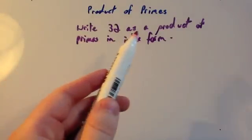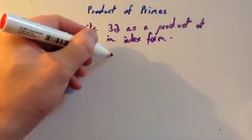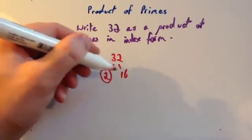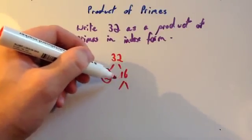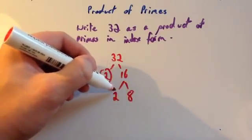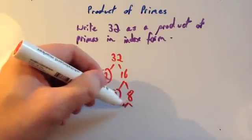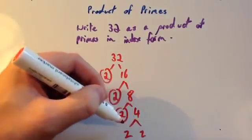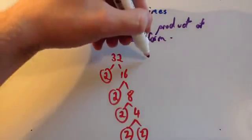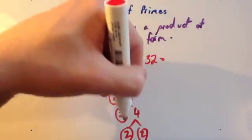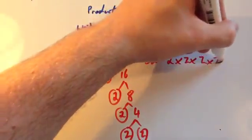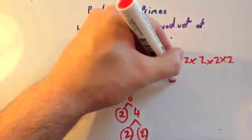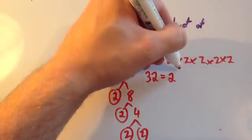The question says: write 32 as a product of primes in index form. So 32 is 2 times 16. 2 is prime, so circle that. 16 is not. 16 is 2 times 8. 2 is prime, circle it. 8 isn't. 8 is 2 times 4. 2 is prime. 4 isn't. And 4 is 2 times 2 — they're both prime, so circle them both. So 32 equals 2 times 2 times 2 times 2 times 2. The question says in index form, so that would be 32 equals 2 to the power of 5.